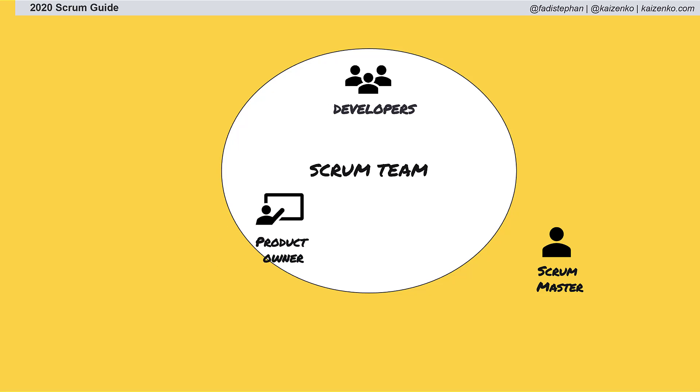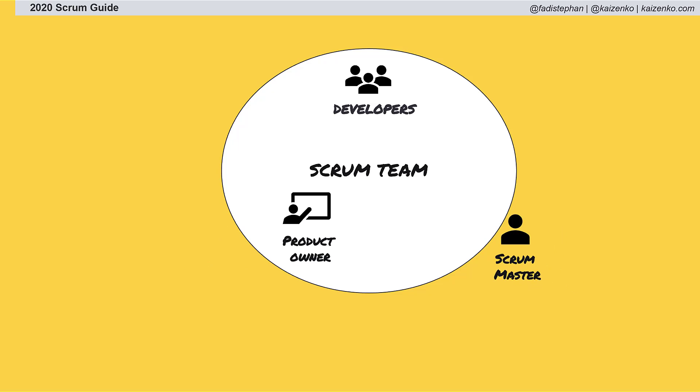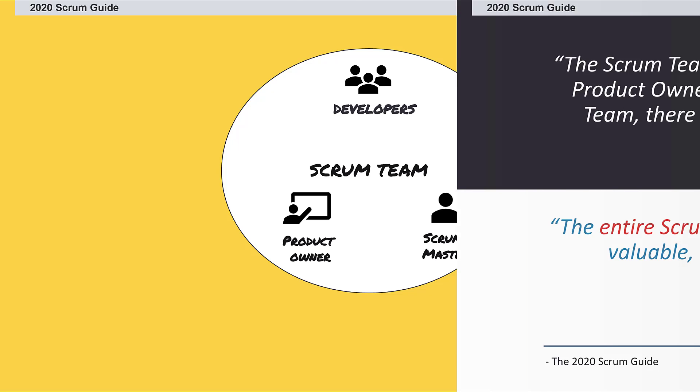Now it's just one team — one Scrum team — and the product owner, the Scrum master, and the developers are all part of the same one team.